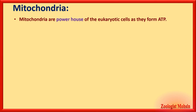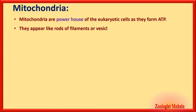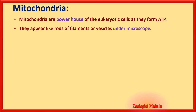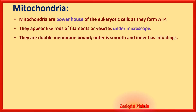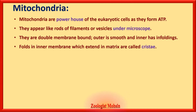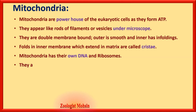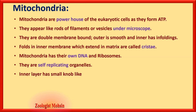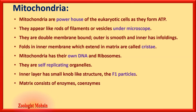Mitochondria are the powerhouse of eukaryotic cells — they are absent in prokaryotic cells — and they form ATP, the energy currency. Under a microscope, mitochondria appear as rods, filaments, or vesicles. They are double membrane-bound: the outer membrane is smooth, and the inner membrane has infoldings. The folds of the inner membrane that extend into the matrix are called cristae. Mitochondria have their own DNA and ribosomes and are self-replicating organelles. The inner layer has small knob-like structures called F1 particles.